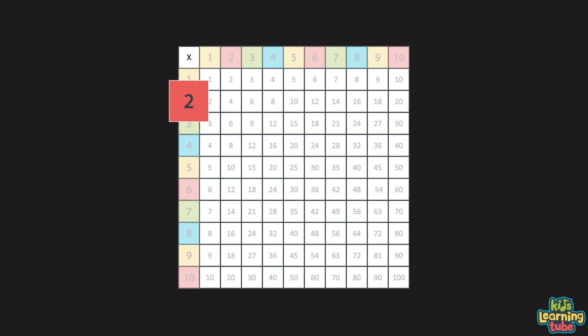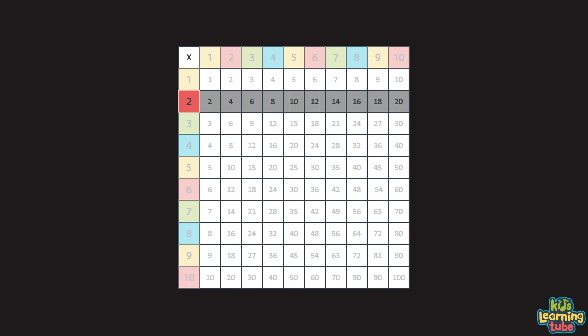Move to 2 and count straight across: 2, 4, 6, 8, 10. Start over if you're lost. Then 12, 14, 16, 18, and 20. Let's try one more row.